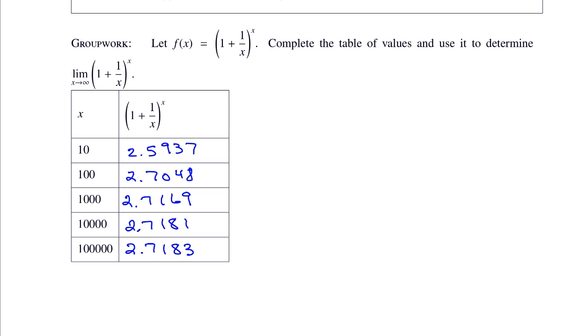So the statement we can make here is the limit as x goes to infinity of 1 plus 1 over x to the x is equal to what? Well, first observation is that it didn't go to infinity like we thought it would. In fact, it's less than 3, which is amazing because it's an exponent with an x in the exponent.